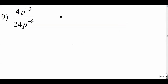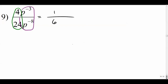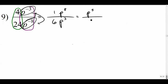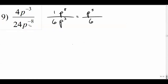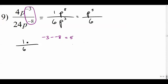Number nine: first simplify the numbers — four over twenty-four is one over six. Then work with the variable terms, which have the same base. One way: take the negative exponent up to get p to the eighth, and move the other negative term down to get p to the third, giving p to the fifth over six. Another way: just subtract the exponents directly — negative three minus negative eight is positive five — giving p to the fifth over six.